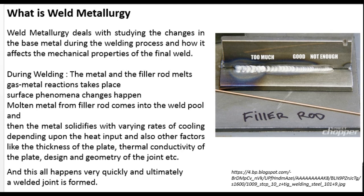During welding, the heat input is a complicated thing. Lots of different temperatures are involved — the temperature ranges from melting point to far below the melting point, so many temperature variations are given to the base plate. The cooling rates are also different depending on the type of joint, the thickness of the plate, and the thermal conductivity of the plate. Different cooling rates will result in different types of microstructure.